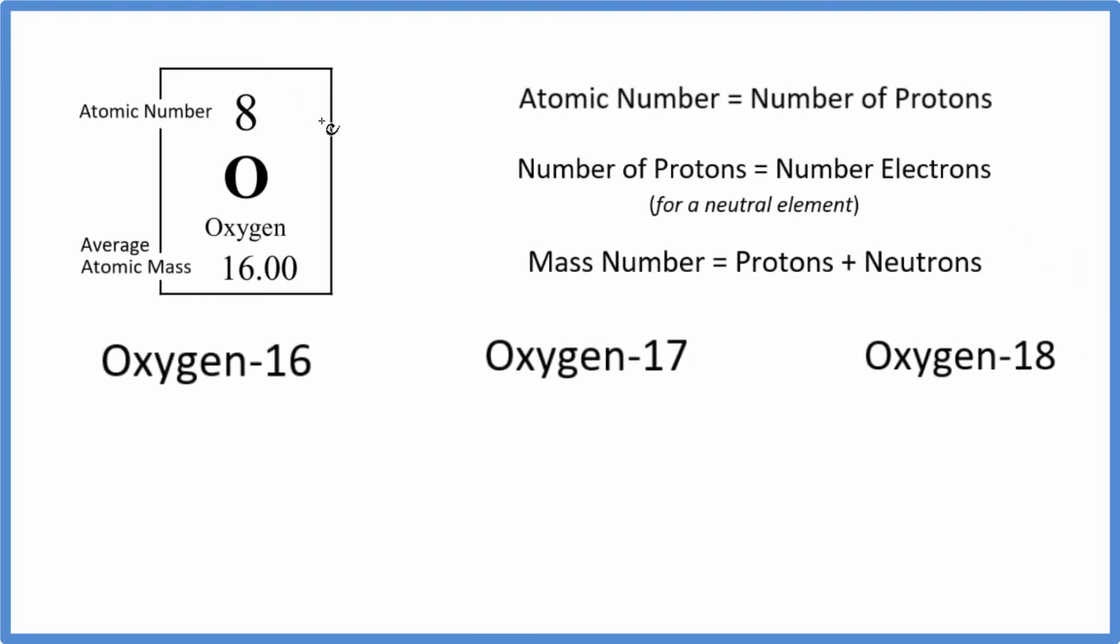In this video we're going to write the isotope notation for oxygen. This is also called nuclear notation or isotopic notation. Oxygen has three main isotopes and we're using what's called hyphen notation.